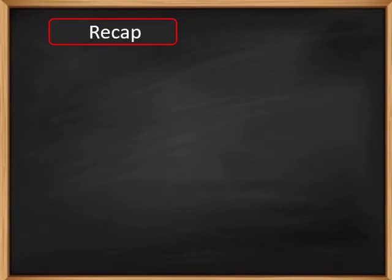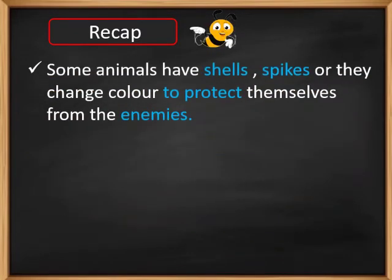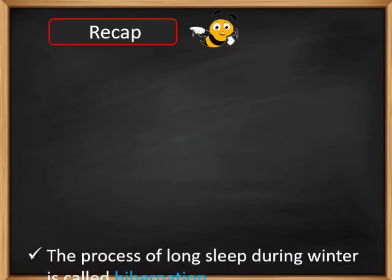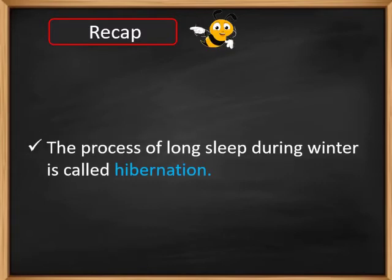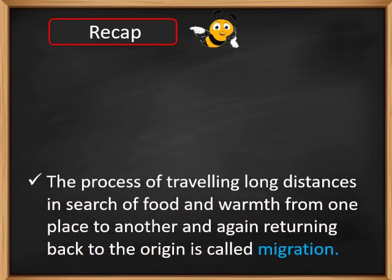Let us revise the characteristics and adaptive features of animals studied so far. Some animals have shells or spikes, or they change their color to protect themselves from enemies. The process of long sleep during winter is called hibernation. The process of traveling long distances in search of food and warmth, and returning back to the origin, is called migration.